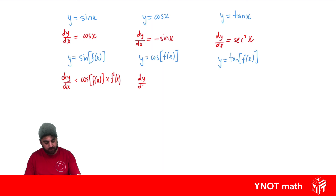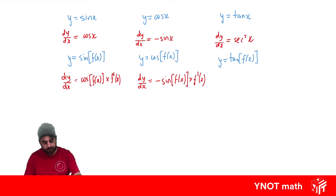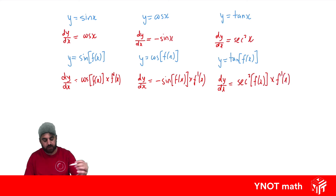And that's the same for all of these. Normally when we differentiate cos, we get negative sine, so that doesn't change — we get negative sine of the function of x, and we just have to multiply by the derivative of that function. Same with tan: when we differentiate tan, we get sec squared of that function, and we just have to multiply by the derivative of that function.